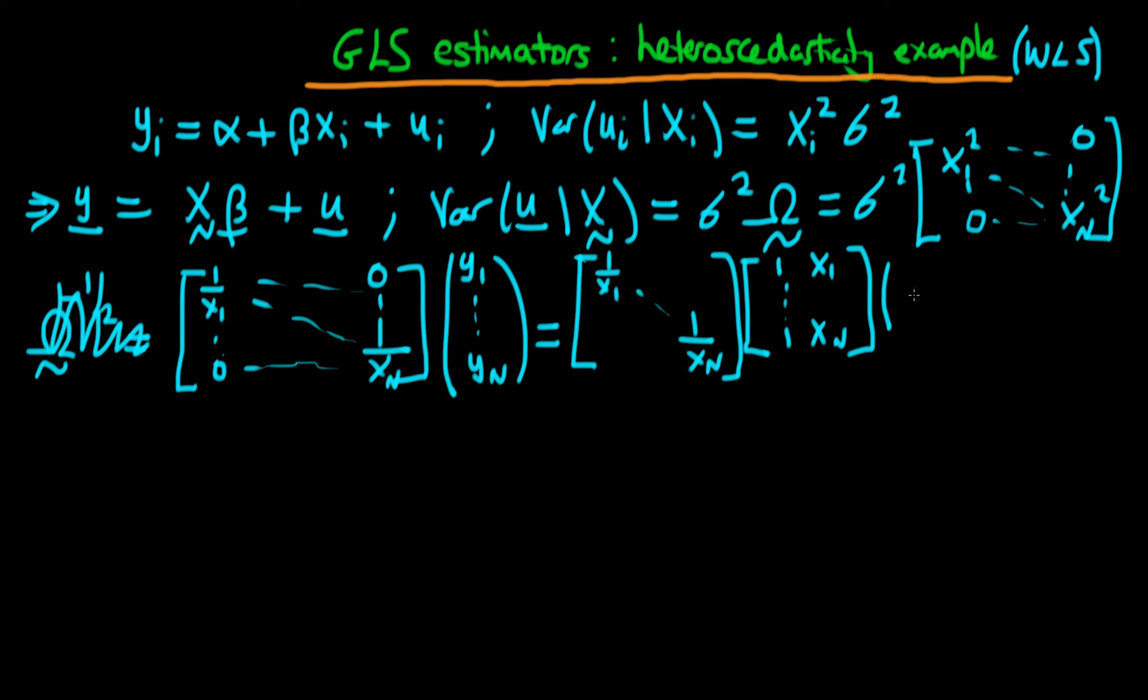Then times our vector of our parameters, which is just in this case alpha, beta, and then finally we're going to have our matrix 1 over x1 through to 1 over xn times our vector of our errors, which is just going to be u1 through to un.